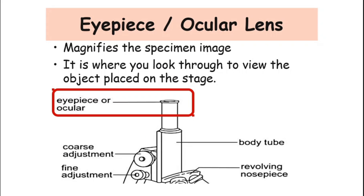The first part is the ocular lens, or the eyepiece. The eyepiece is the viewer lens for the user — it is where the user looks through to see the magnified image of a sample. It can magnify the sample up to 10 times or 15 times its original size.